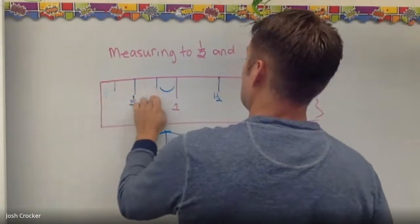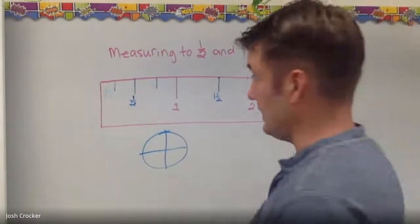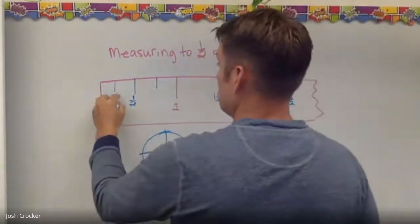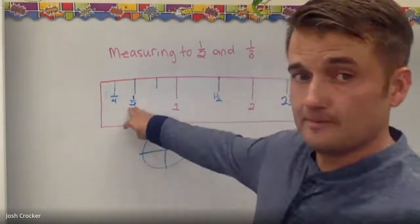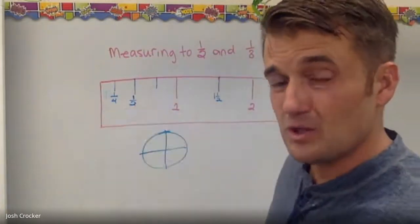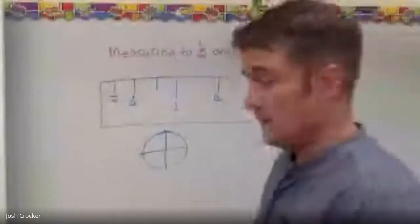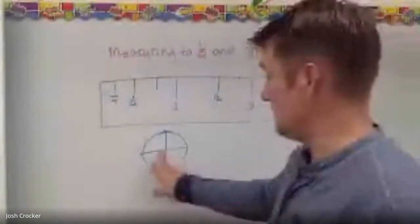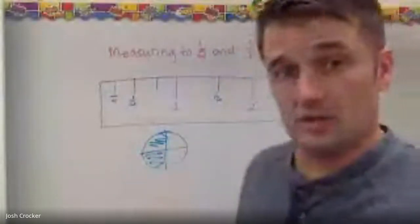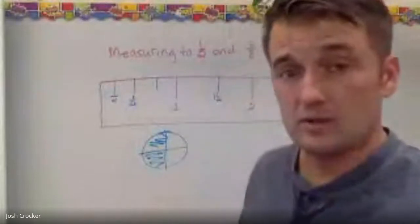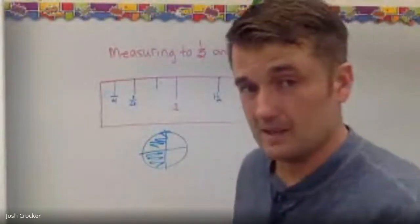So on a ruler when we're measuring something we count up, right. So this first line would be one fourth, and then the half inch line is really also the two fourths line. Okay, but we don't call it two fourths because like with my pizza here, if you've got that much but you have two fourths—it's true that you have two fourths but we would just say half because it's simpler. Okay, it's simplified.